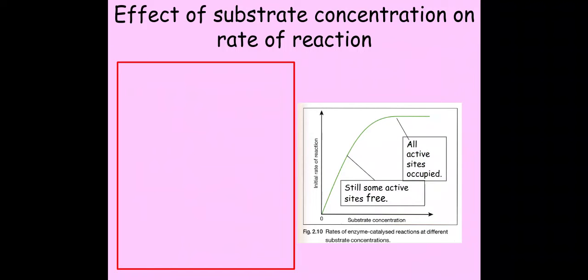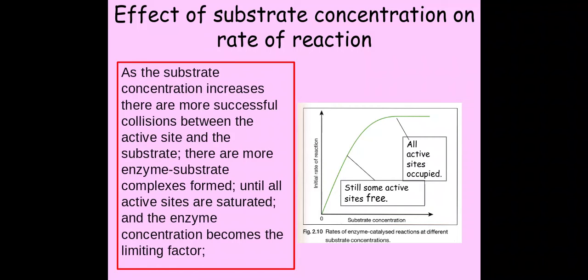Let's have a quick look at substrate concentration. So as you can see here as the substrate concentration increases my rate of reaction will increase and that is because again I'm going to get more successful collisions between the active site and my substrate therefore more enzyme-substrate complexes being formed and this happens up until I get this plateau.